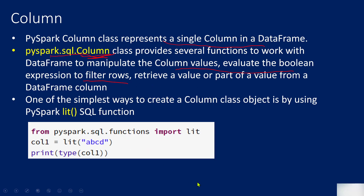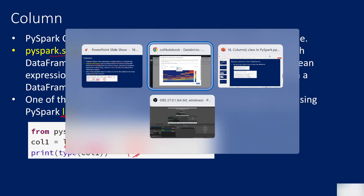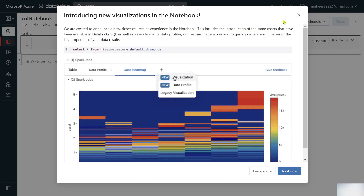As I explained in the presentation, `lit` is a SQL function and is the easiest way to create a Column class object. When you use `lit` — meaning literal — with some static value, it creates a complete column with that static value. For example, a column with 'ABCD' as the value for every row.